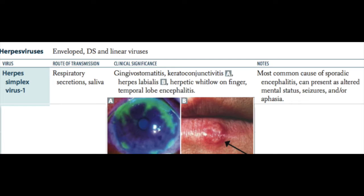Let's speak specifically about the Herpes virus family. HSV1, or Herpes simplex virus type 1, causes gingivostomatitis, keratoconjunctivitis, and temporal lobe encephalitis — it's actually the most common cause of sporadic encephalitis in the United States. It often causes herpes labialis, or cold sores. The route of transmission for HSV1 is through respiratory secretions and saliva.